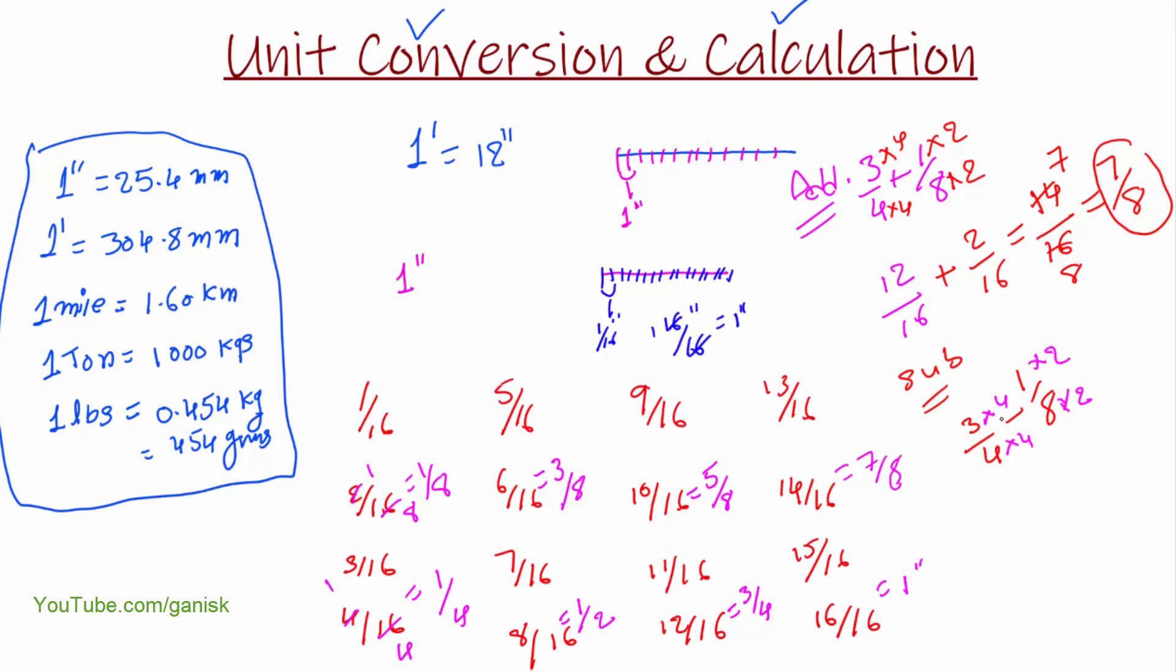So multiply with 2. So here, 12 by 16 minus 2 by 16. Bottom same value, so we can directly subtract this: 12 minus 2. So we become 10 by 16 here. So this is divisible value, 2 times 5 and 2 times 8. So final value is 5 by 8. That's it about the calculation and unit conversion.